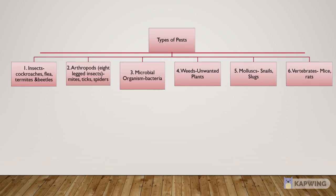There are many types of pest. Pests can be classified as follows. Number 1: Insects. It includes cockroaches, fleas, termites and beetles. Number 2: Arthropods. These are pests having 8 legs and include mites, ticks and spiders.